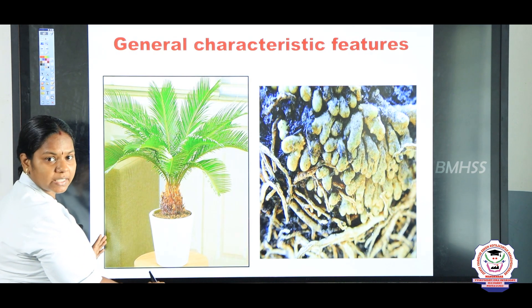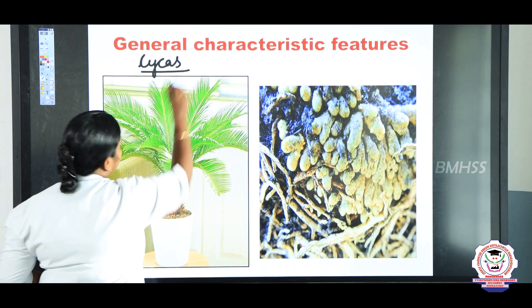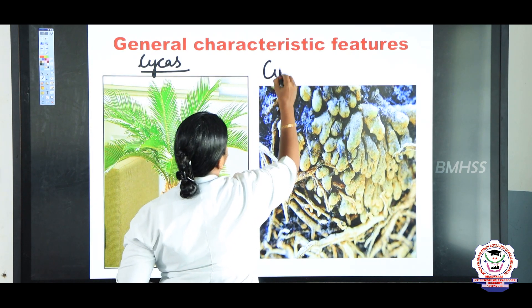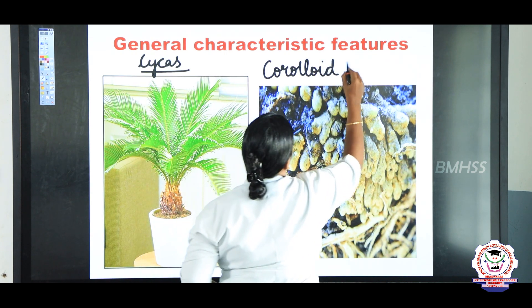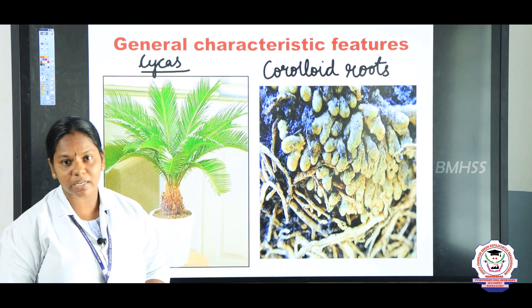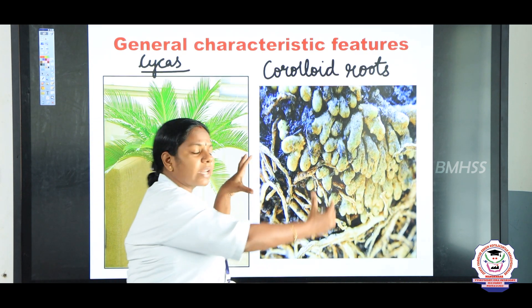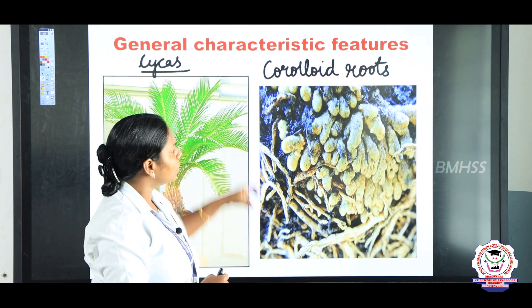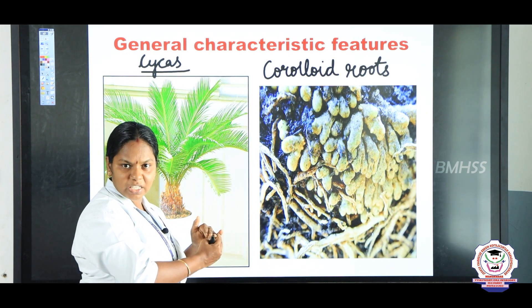Now we are going to study about the roots. What is the name of this plant? It is Cycas. This is a root of Cycas — the roots of Cycas we call coralloid roots. In these roots, there is a symbiotic association of blue-green algae. In the roots, some blue-green algae are present which help in nitrogen fixation of the soil. The blue-green algae and the coralloid roots are in a mutual relationship with each other.